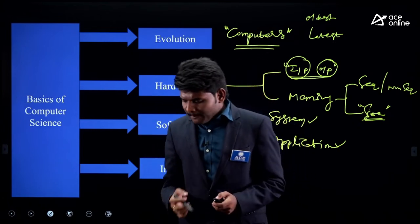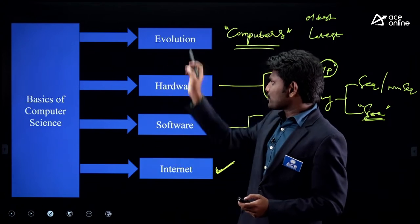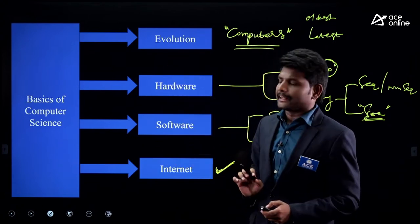As per the RRB JE syllabus, the major topics are: evolution of computers, hardware, software, and internet.